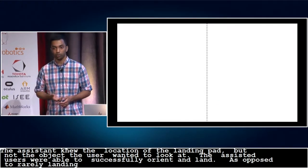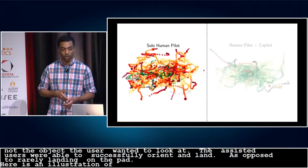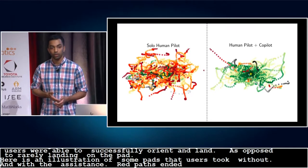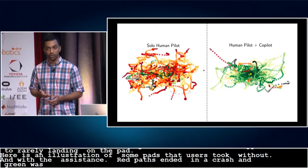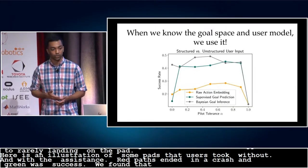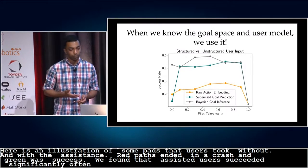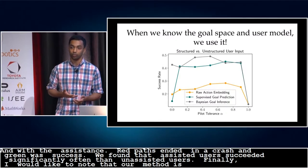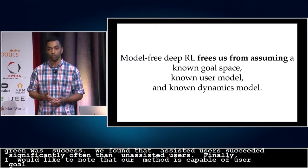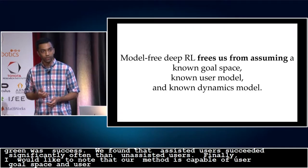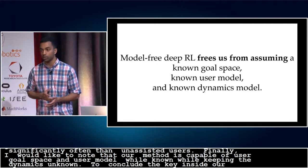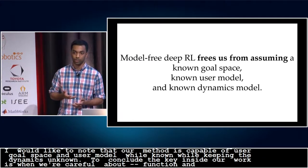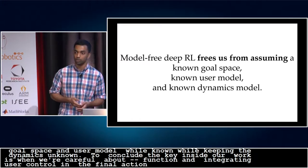Here's an illustration of some paths that users took without and with assistance. Red paths ended in a crash, while green ended in success. We found that assisted users succeeded significantly more often and crashed less often than unassisted users. And finally, I'd like to note that our method is capable of leveraging a goal space and user model when they are known, while still keeping the dynamics unknown. To conclude, the key insight in our work is that when we are careful about designing the reward function and integrating user control into the final action, we can use model-free deep RL to implement shared autonomy with minimal assumptions. Thank you.